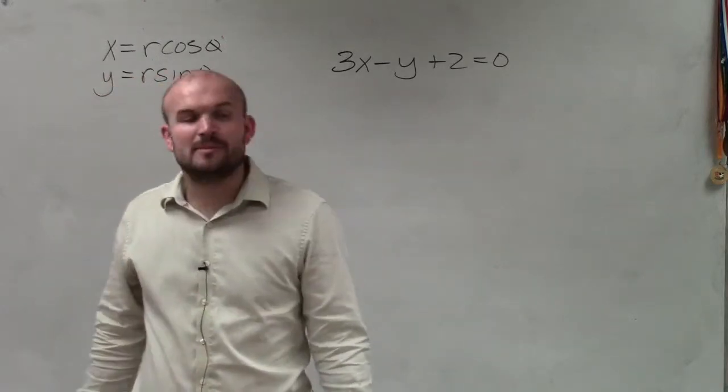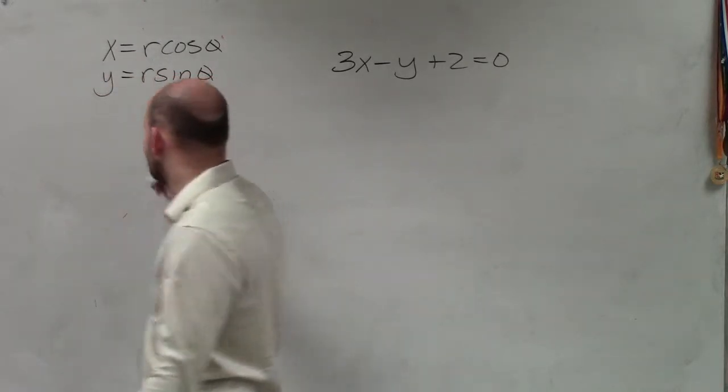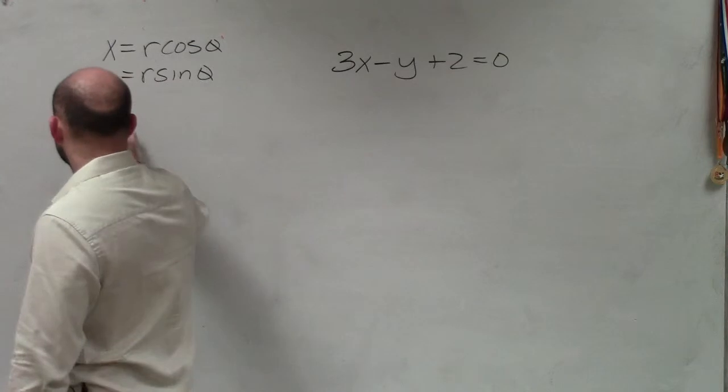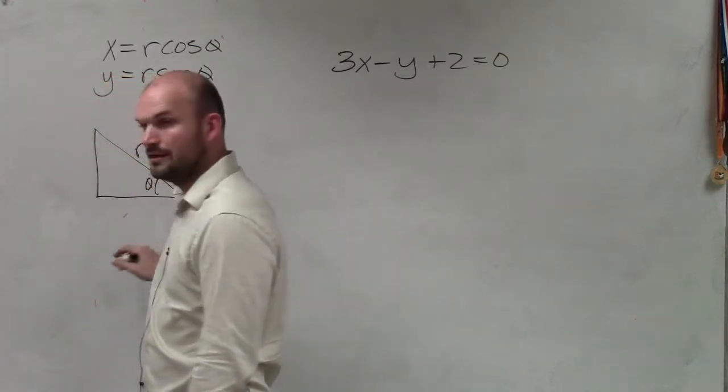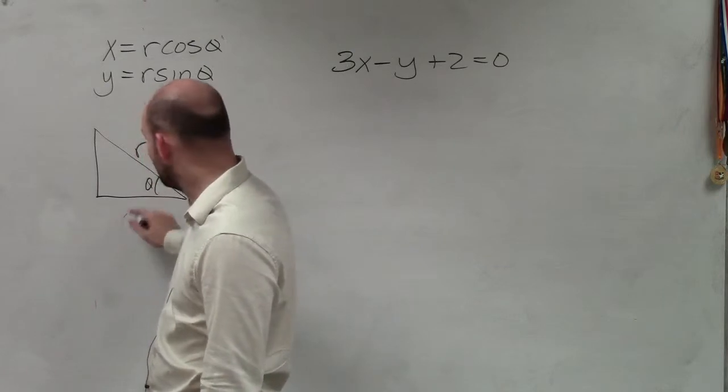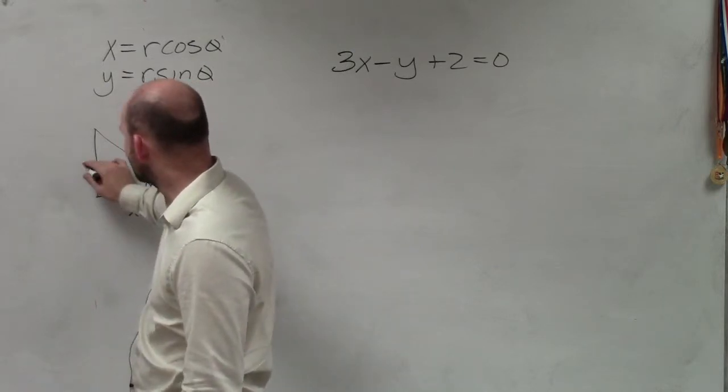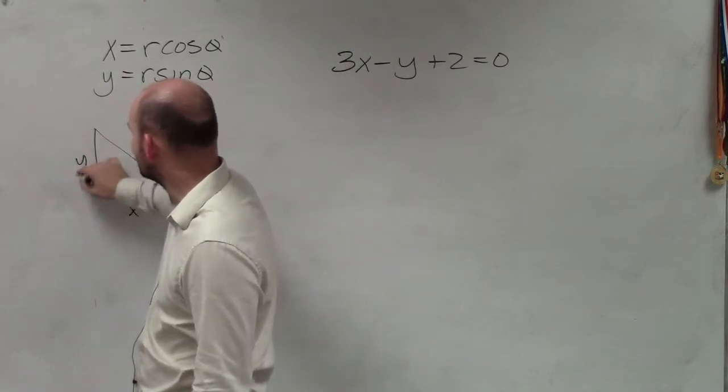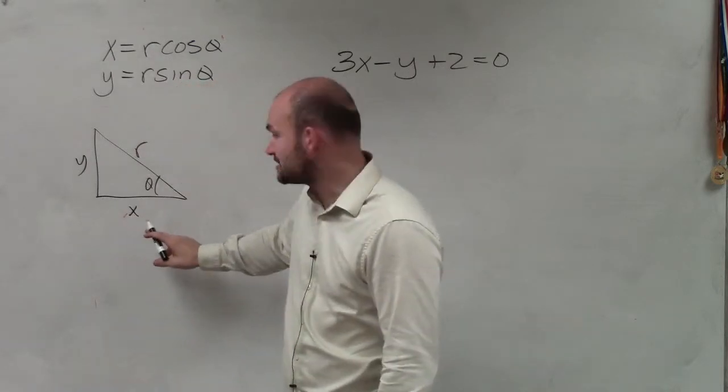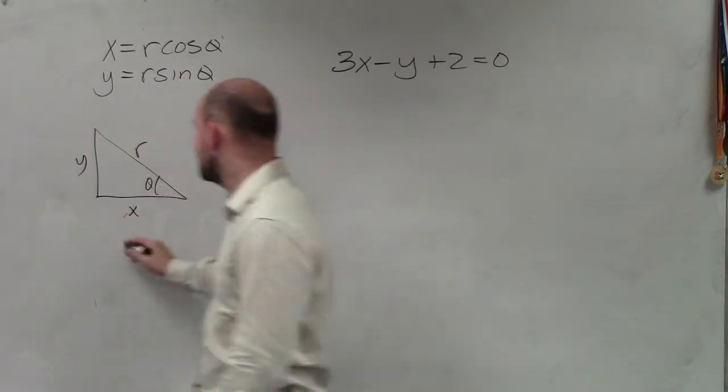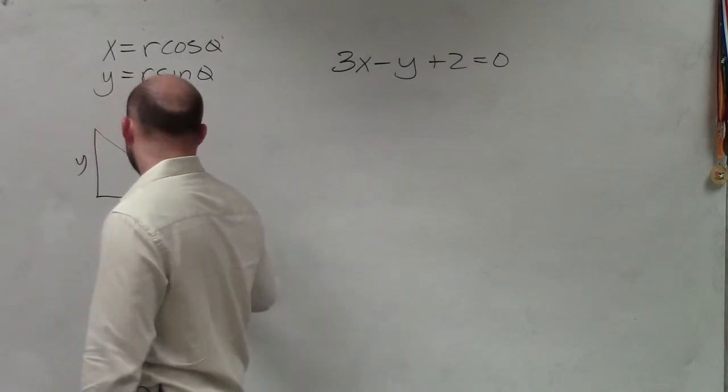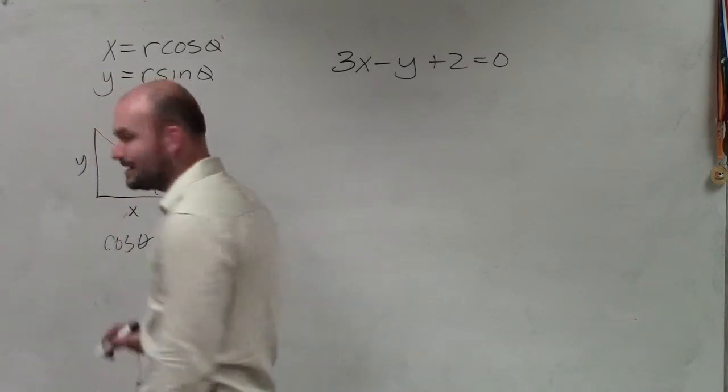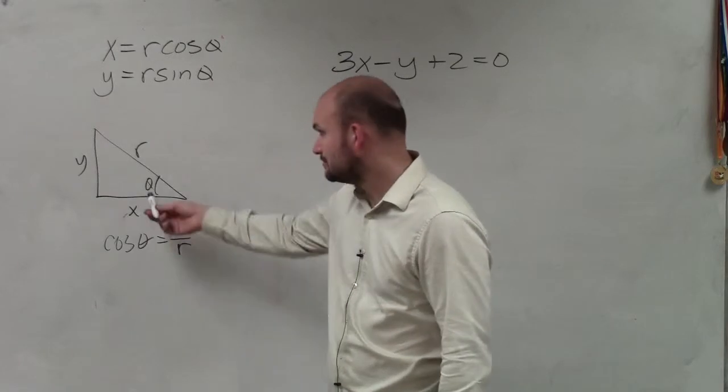Where does that come from? Remember, that comes from the triangle. If you have the triangle with r and theta, let's say this value is x and that's y. How do you figure out the value of x? Well, cosine of theta equals adjacent over hypotenuse, just from the triangle.